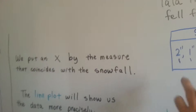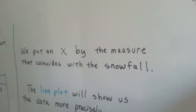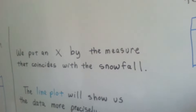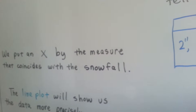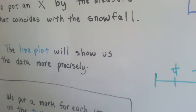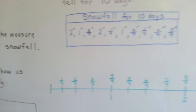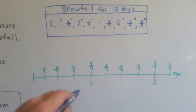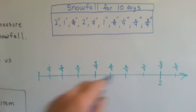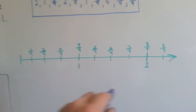So what we do is, we put an X that coincides with each snowfall that she wrote down. The line plot will show us the data more precisely. Here's the snowfall for 10 days, and we can mark an X on the number line to help us look at the data. So we have 2 inches — put an X.